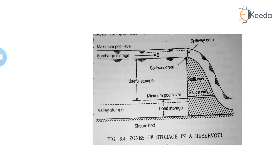This normal pool level corresponds to either the level of the spillway crest or to the top level of the spillway gate. It is directly at the level of the spillway crest — the crest is the narrow portion at the top of the spillway where the spillway gate is located. If there is a provision of a gate, then the level of the water at the top of the gate is known as the normal pool level.